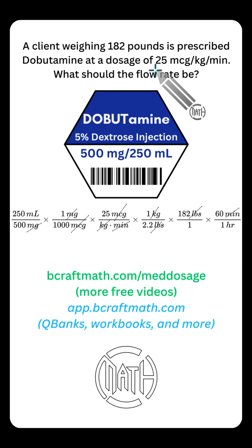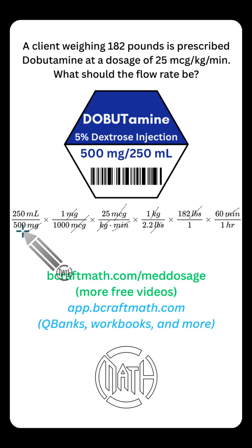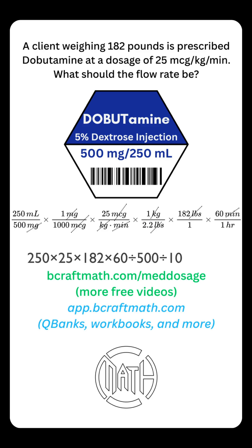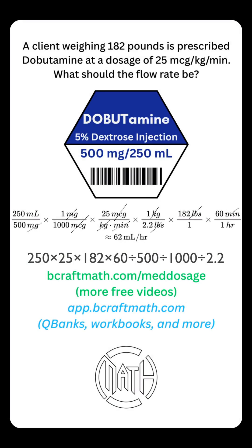Back to our goal: flow rate, milliliters per hour. Milliliters is the only word left at the top; hour is the only word left at the bottom. We've met our goal. Let's multiply all of our top numbers and divide by all of our bottom numbers. Rounding to the nearest whole number, we get 62 milliliters per hour.